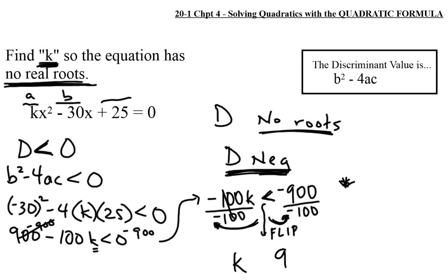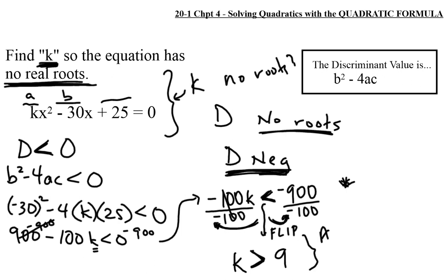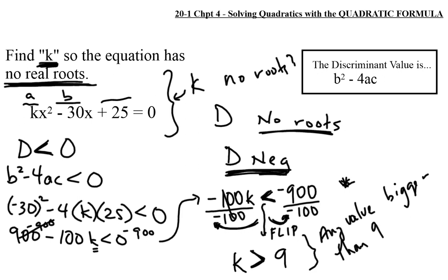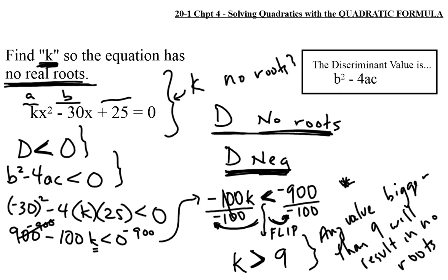Dividing both sides by negative 100: we're left with k, and our less-than sign becomes a greater-than sign, and we're left with 9. So k has to be greater than 9. Any value bigger than 9 will result in no roots. This is a quirky question that tests whether you truly understand what the discriminant tells you — no roots means d is negative, so we set up an inequation with the discriminant less than 0, and any value of k greater than 9 satisfies that condition.